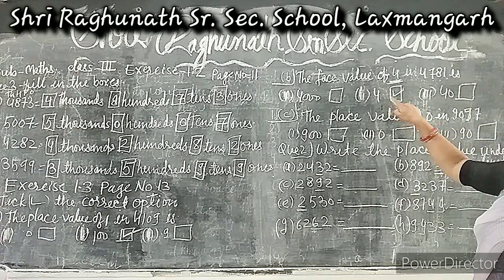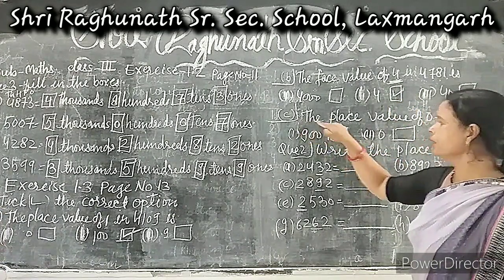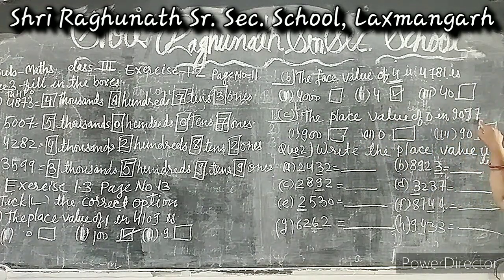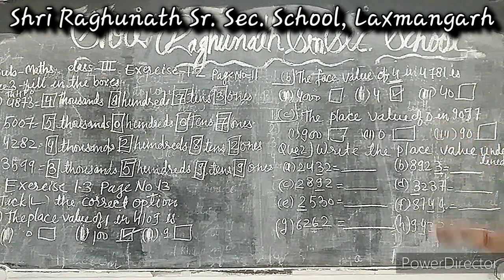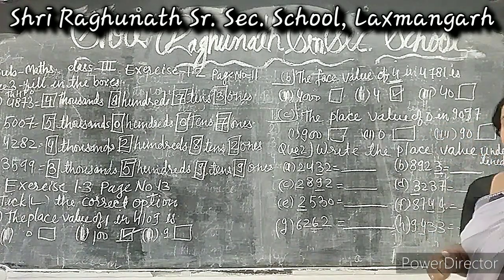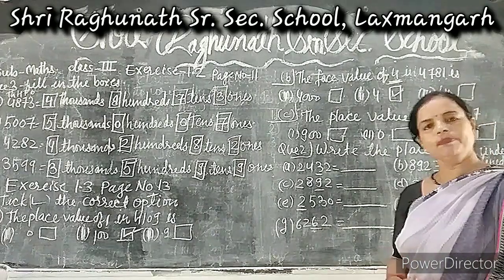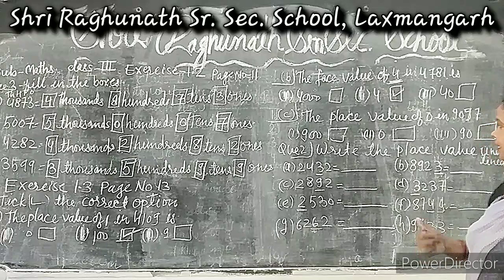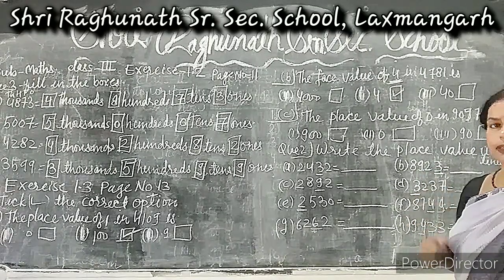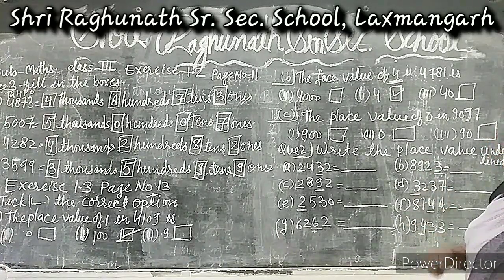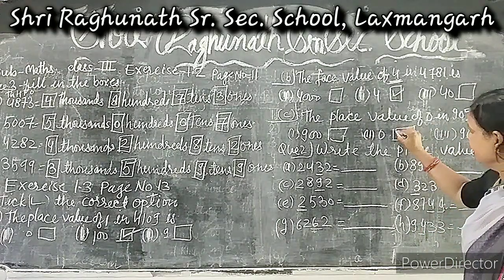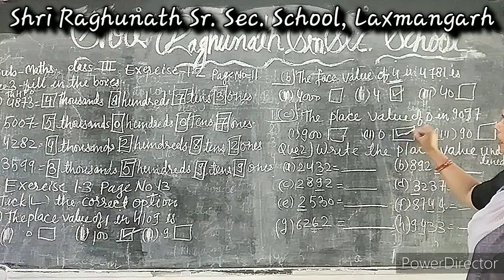The right answer for this will be that. Third question: the face value of 0 in 9,097. In 9,097, what is the place value of 0? The rule about 0 is that whatever place 0 is in, its place value is always 0 — whether it is in the thousands place, hundreds place, or tens place. The place value of 0 is always 0. Therefore, the right answer is this.